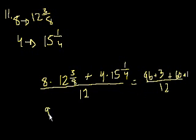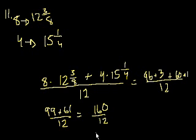And so we have 99 plus 61. All of that over 12. Which is equal to 160 over 12. Let's see. Does 12 go into 160? 12 times 12 is 144. Let me think about this. So let me just divide it by top and bottom by 4. So you get 40 over 3. 40 over 3.